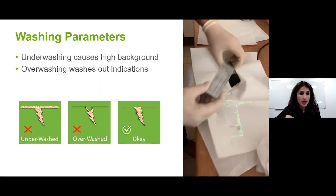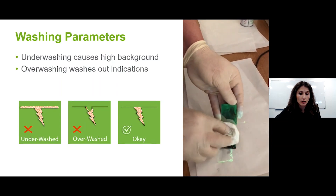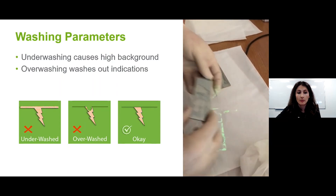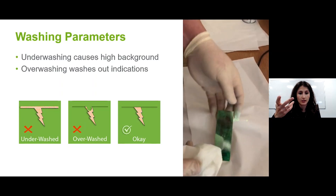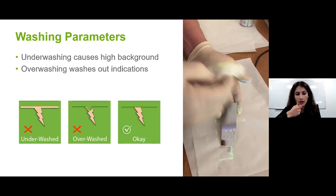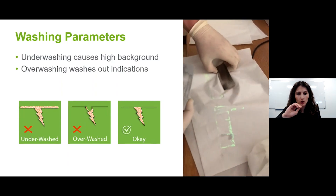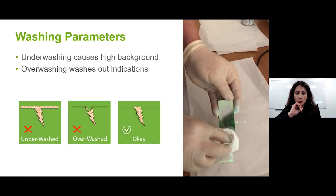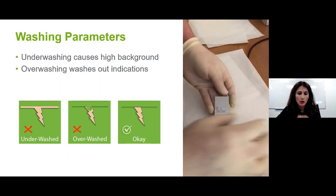Over-washed parts remove the penetrant from the indication, preventing it from being seen because it washes out all the penetrant so it can't arise to the surface. The correct wash — just right — really comes down to knowing the pressure of your spray gun and how to do this properly.